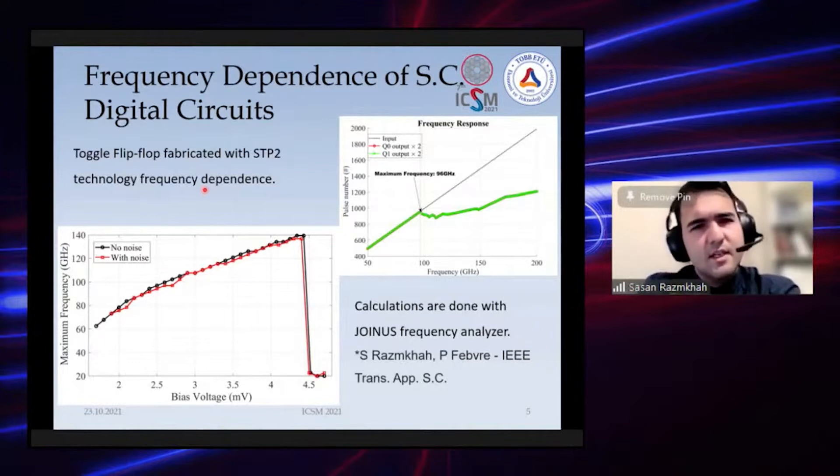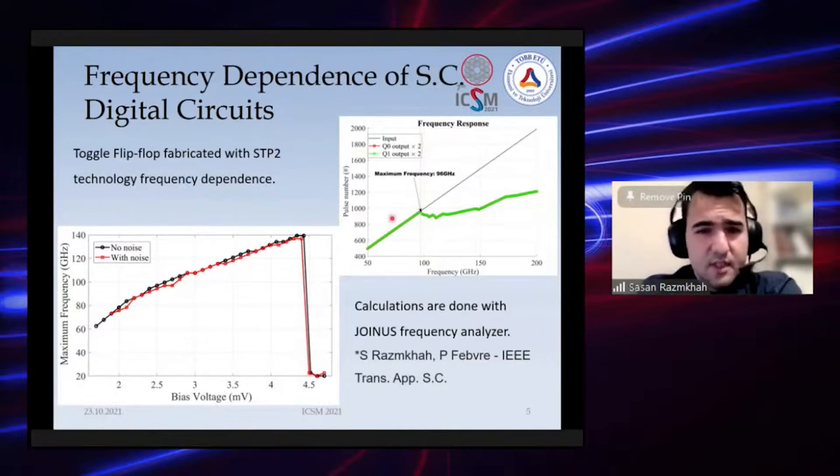The critical current is about 2.5 kiloamps, so it's not a very fast technology.